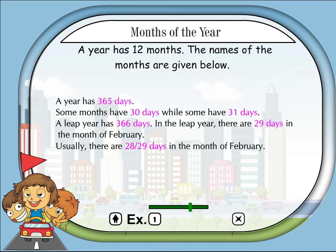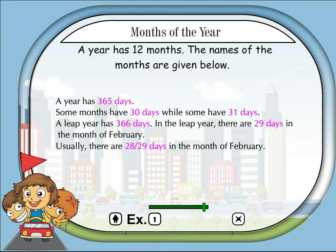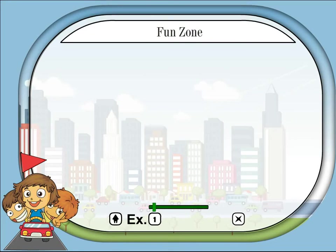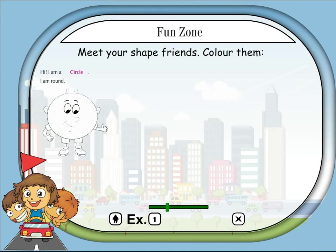A year has 365 days. Some months have 30 days while some have 31 days. A leap year has 366 days. In a leap year, there are 29 days in the month of February. Usually there are 28 days in February.